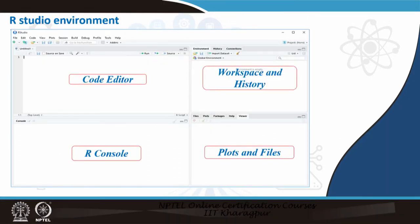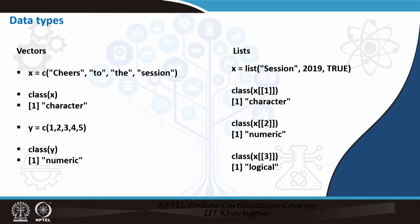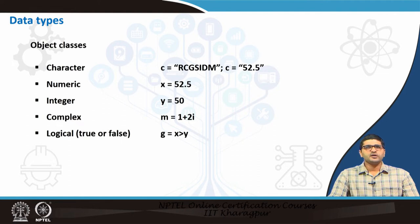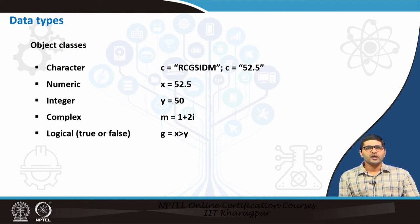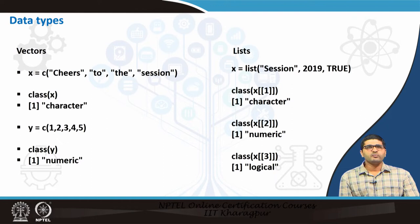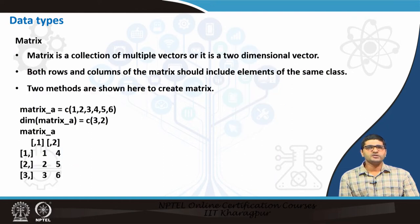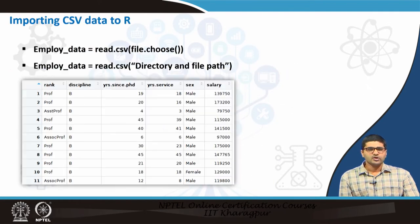This is the code editor as shown in R software. At the top left is the code editor; at the top right is the workspace and history. On the left side we can see the R console, and at the bottom right we can see plots and files. Now we will try to understand different data types and objects in R. R has 5 object classes: character, numeric, integer, complex, and logical. We will also look at vectors, lists, matrix, and data frames.